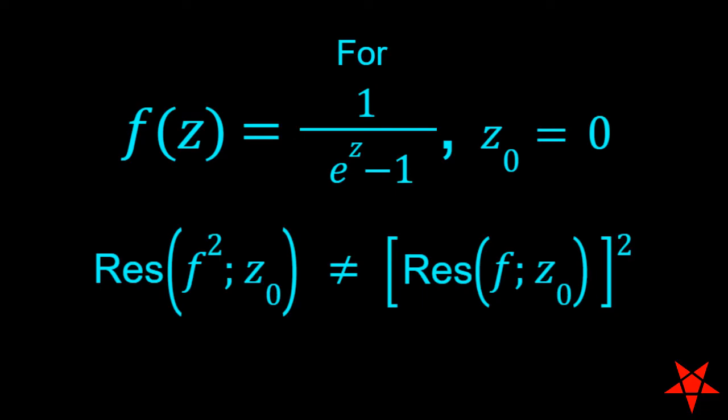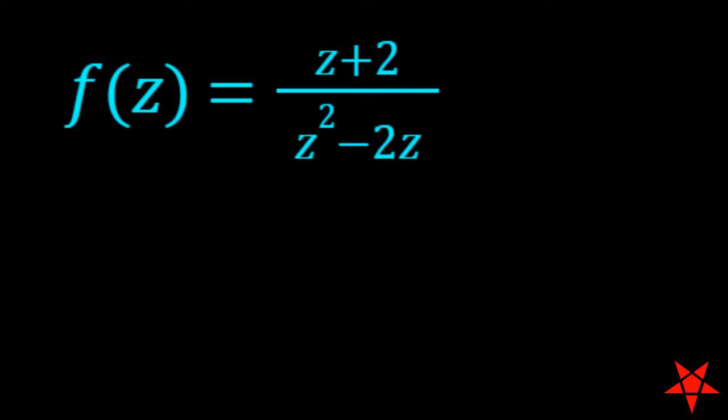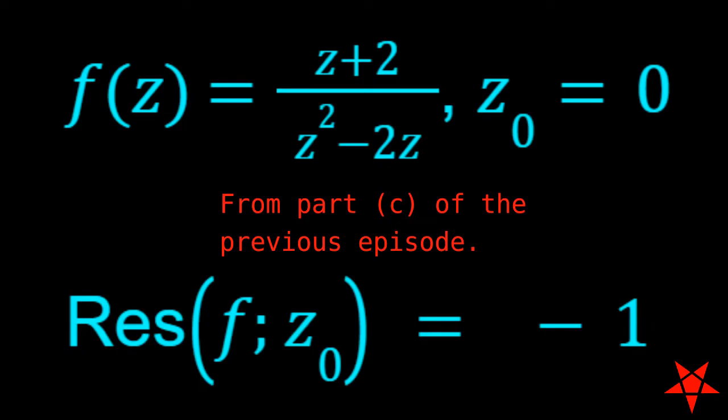Our next example will be f of z equals z plus 2 divided by z squared minus 2z for a residue located at z0 equal to 0. Like the previous functions, we already calculated this residue in the previous episode, specifically Part C. So we'll skip the details. We know that it's equal to negative 1, so we can move on to dealing with the square of the function.